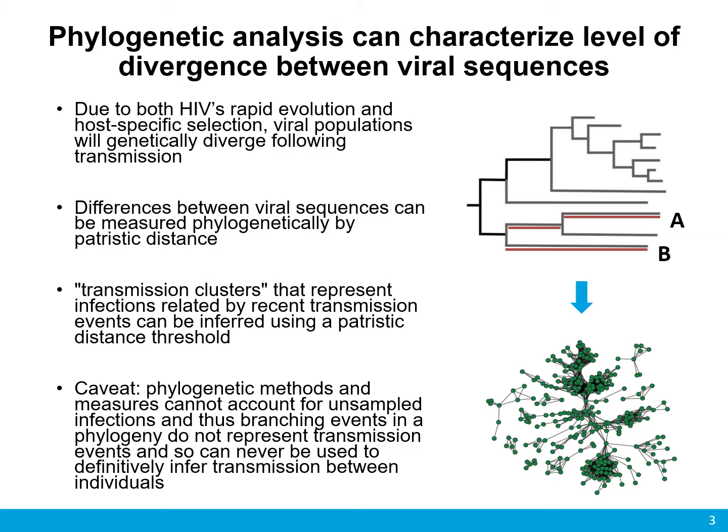Completing analyses at a group level like this is done to maintain patient confidentiality. It's worth noting one caveat here, which is that phylogenetic methods and measures rely upon only the sequences that have been collected at a given time and therefore cannot account for unsampled infections. This means that branching events in a phylogeny do not represent transmission events and can never be used to definitively infer transmission between individuals.